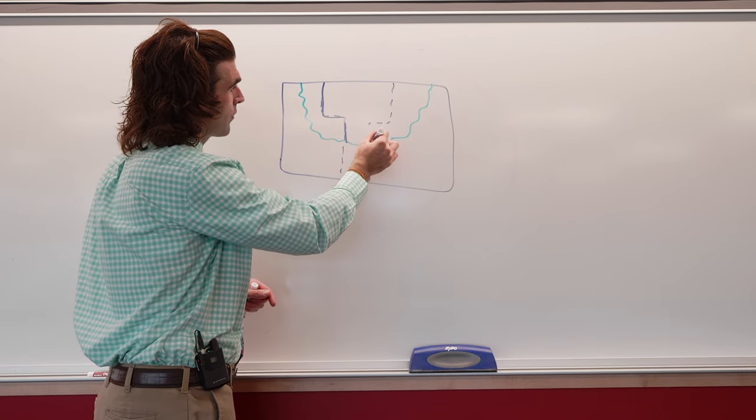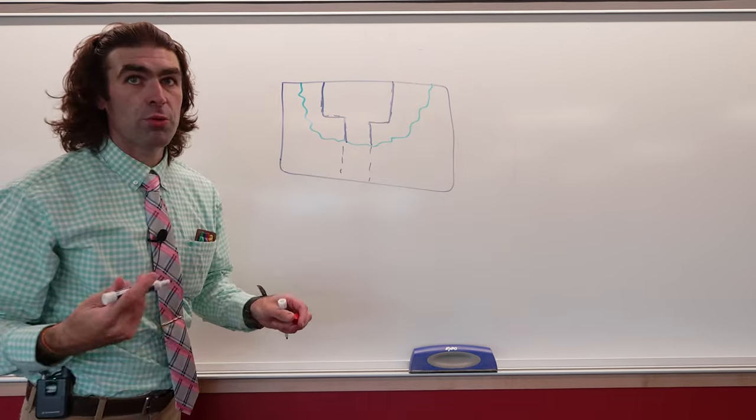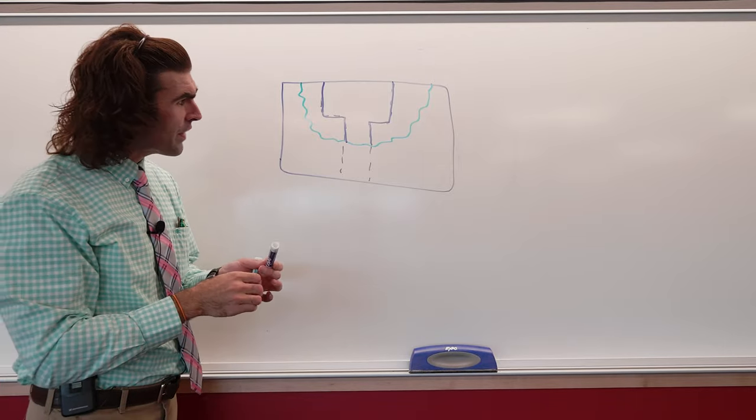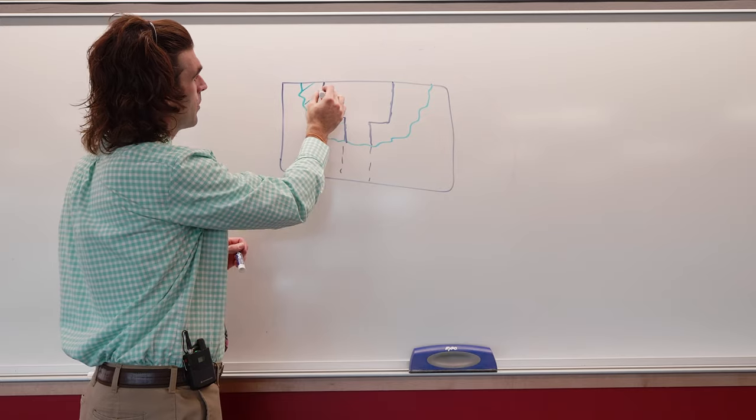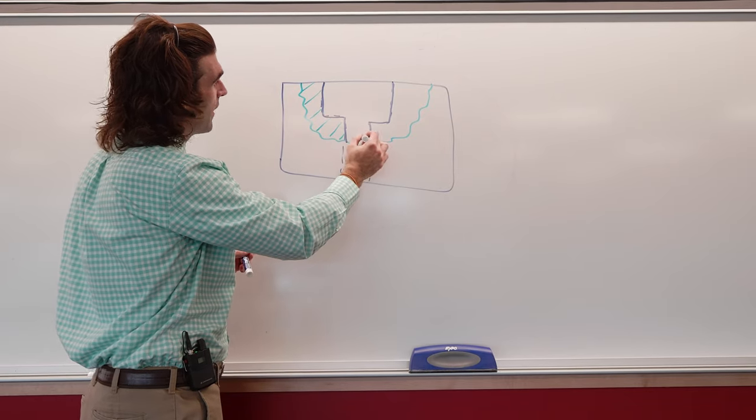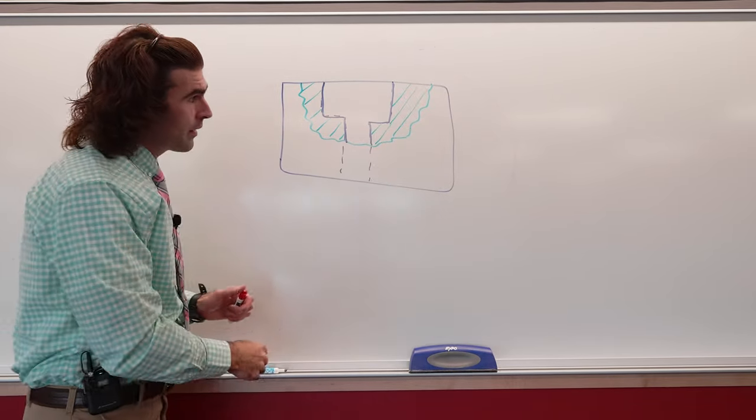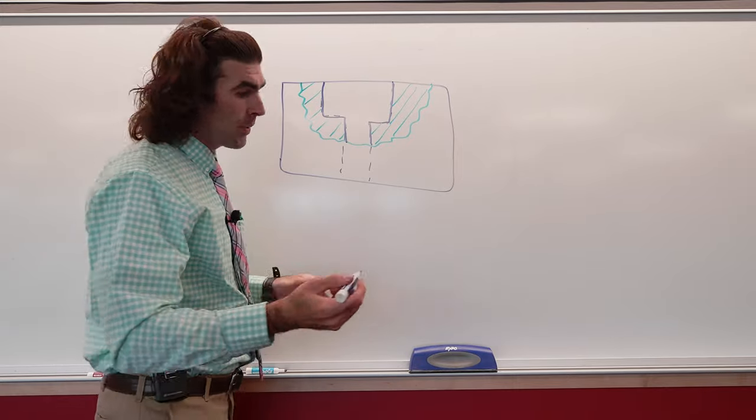Just like a section view, anything in the section will become visible. Then anything between the feature and the short break line will just become section lines. At this point we could dimension this feature.